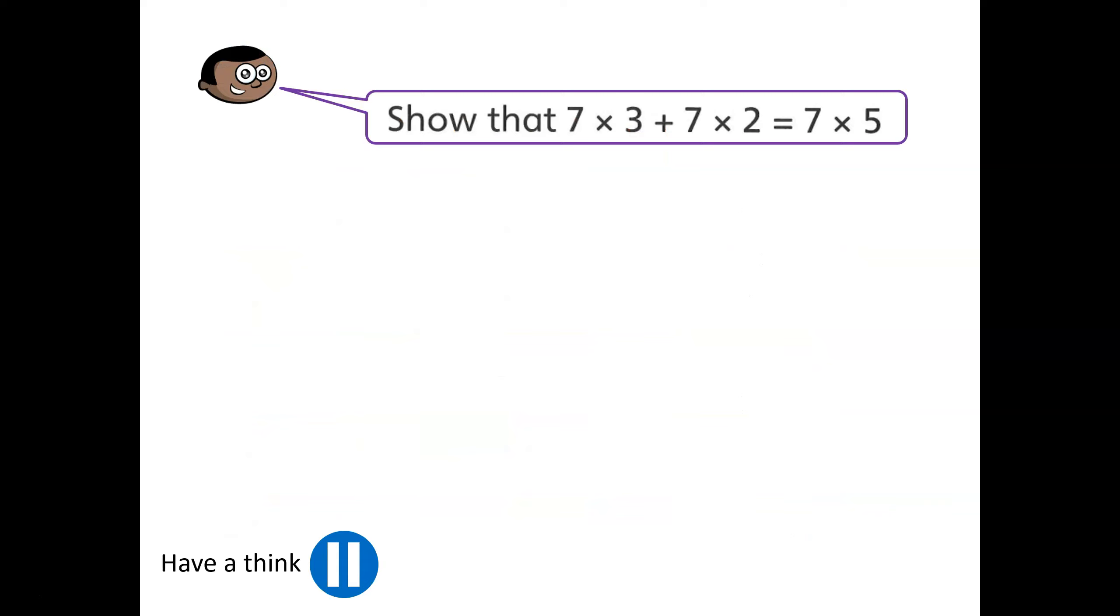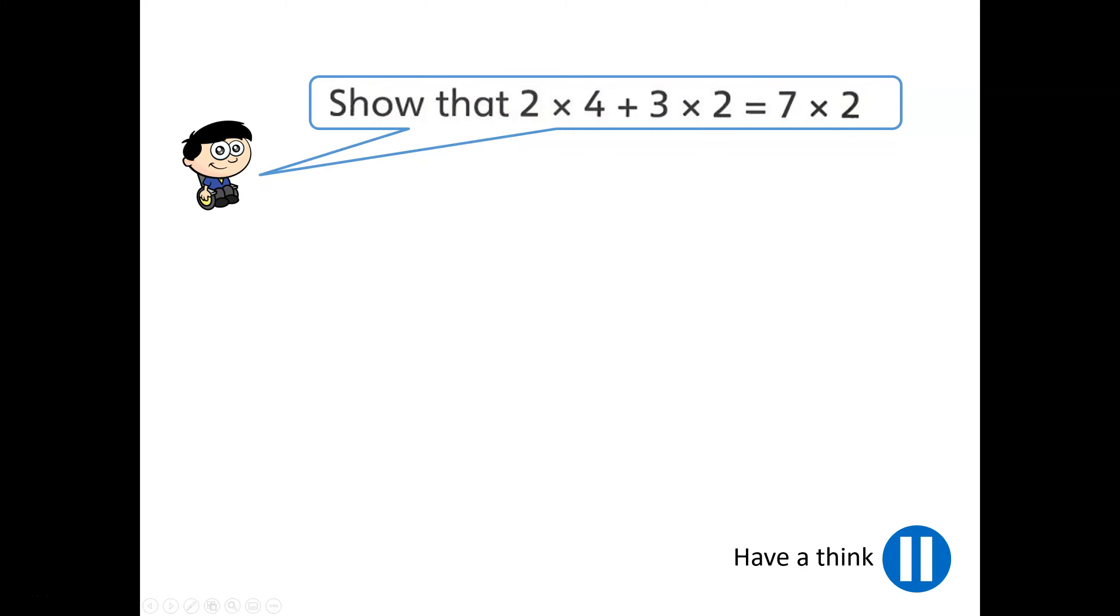Here's another thinking challenge for you. Can you show that 7 times 3 and 7 times 2 is equal to 7 times 5? We can see there are two multiplication calculations that have been added together on one side of the equation, and on the other side of the equation there's a single multiplication calculation. Do these have the same value? Seven groups of three is equal to 21 and seven groups of two is equal to 14. Those two groups added together is equal to 35. Over here, 7 times 5 is equal to 35. So we have shown that 7 times 3 add 7 times 2 is equal to 7 times 5. Pause the video and examine this equation. Press play when you are ready to see how you got on. We can see that there are two multiplication calculations and that they have been added together.